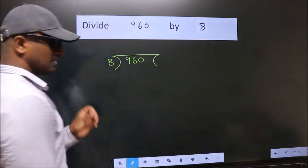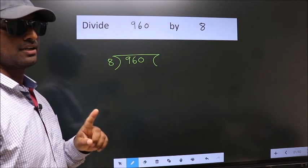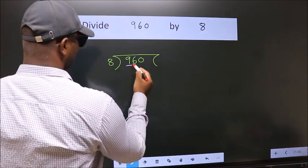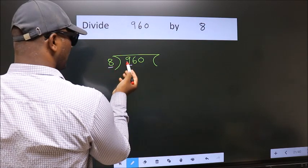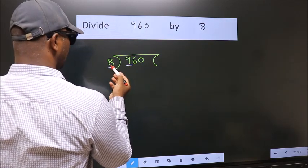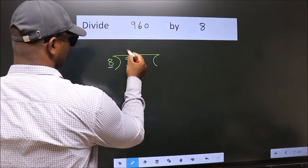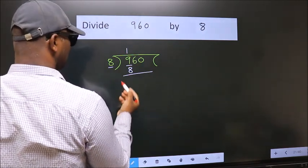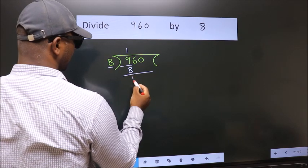This is your step 1. Next, here we have 9, here 8. A number close to 9 in 8 table is 8 ones, 8. Now, we should subtract. We get 1.